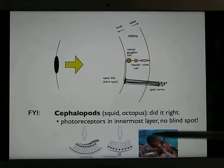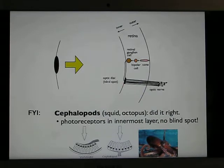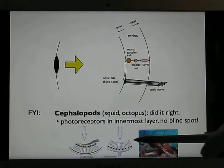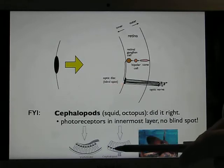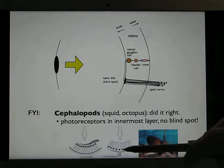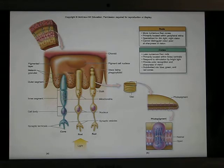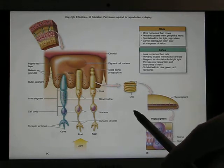The octopus actually has a better eye design than we do — they put the photoreceptors on the outside, so the axons go into the posterior part and they don't have a blind spot. The octopus actually has a better eye design than we do.